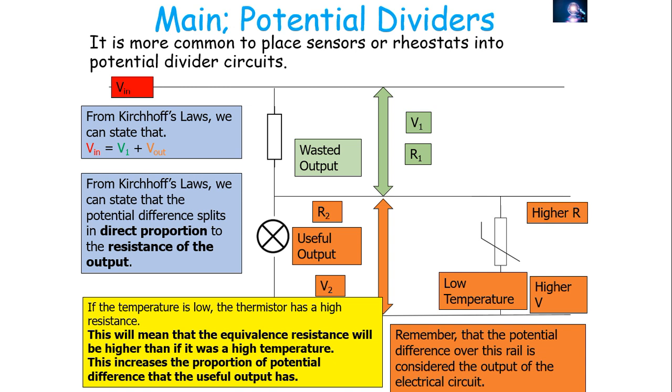In today's lesson we've looked at potential dividers, how they work, and their applications — including a thermistor, a rheostat, and the more complex case of placing a sensor in parallel with the useful output, which we call loading the potential divider. If you've learned from today's lesson you should be able to state what a potential divider is, explain how it works, link it to applications with a sensor or varying resistance, understand the change in potential difference, and explain what happens when a sensor is placed in parallel with the useful output. Hopefully you've enjoyed this lesson — thank you and have a lovely day.